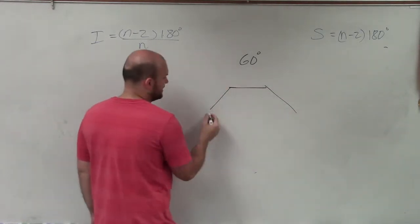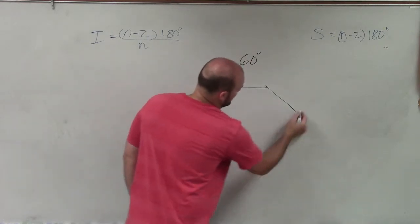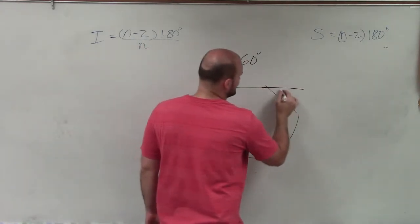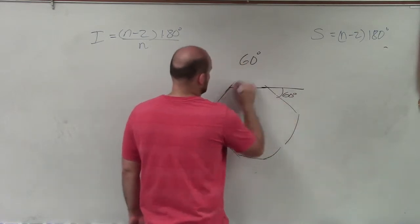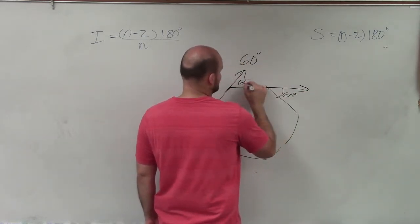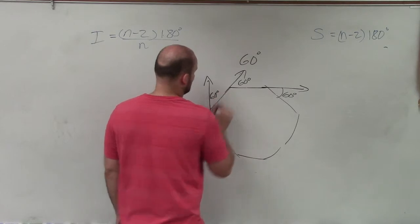So let's say I have a figure, and I don't know how many sides it has, but I do know that one of the exterior angles, or all of the exterior angles, are going to be 60 degrees. So remember, by creating exterior angles, I can just extend each one of these.